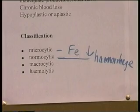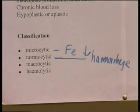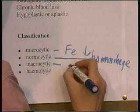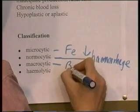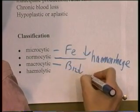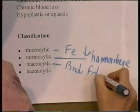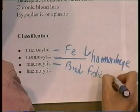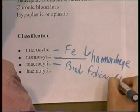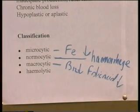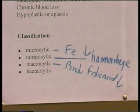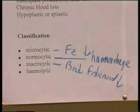Large blood cells — the pernicious types of anemia — are caused by lack of vitamin B12 or lack of folic acid. It also occurs in so-called macrocytosis of pregnancy.